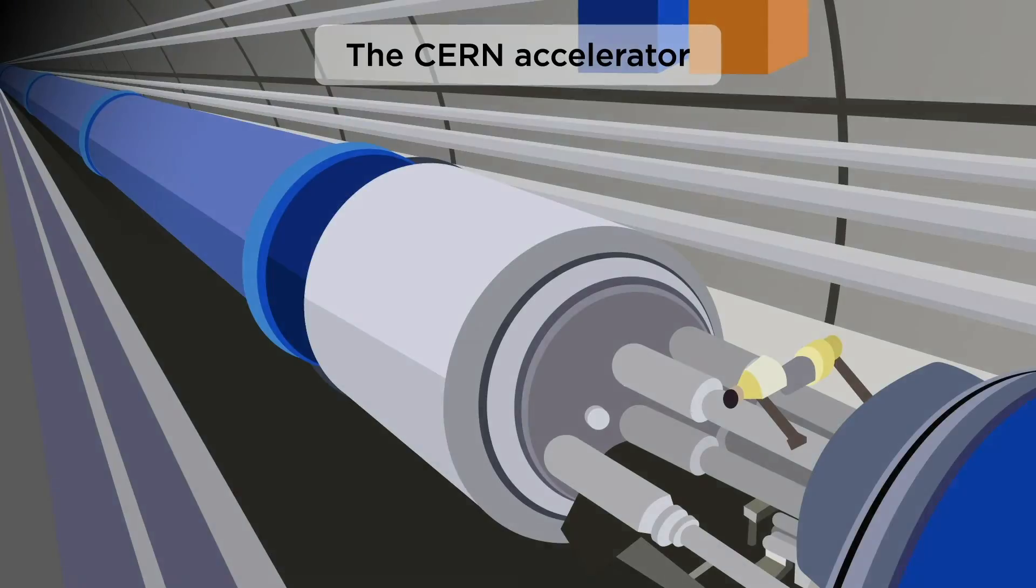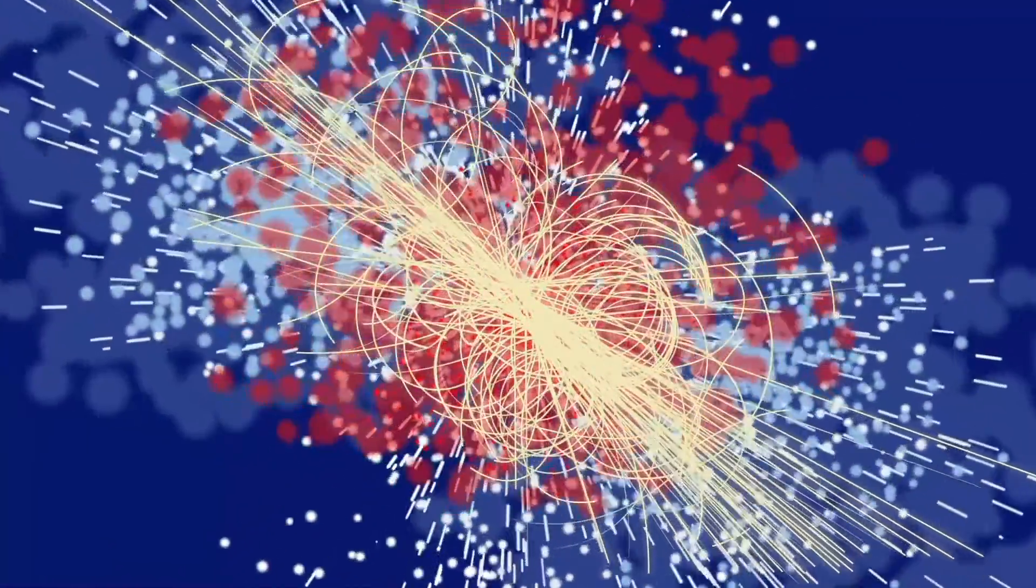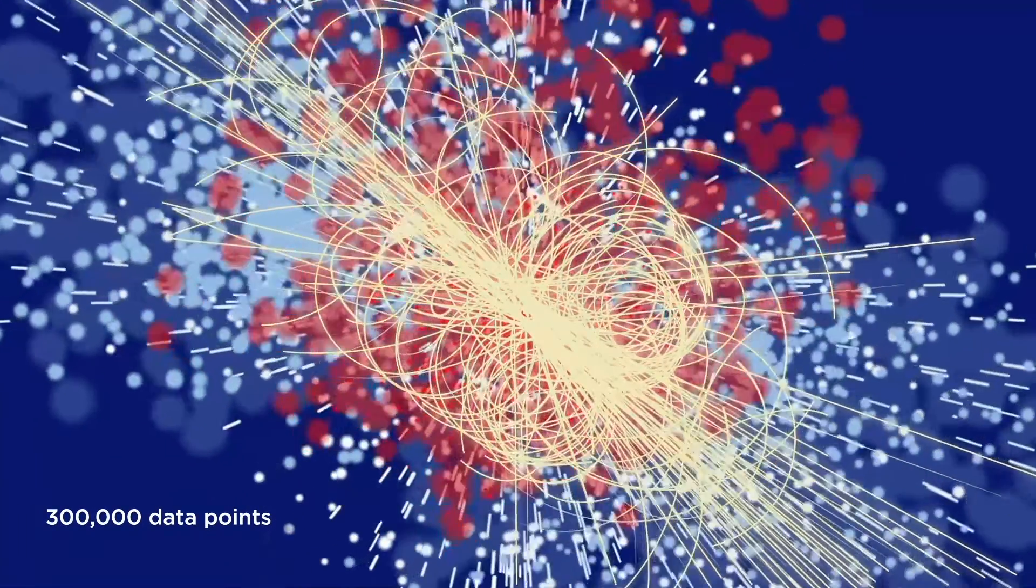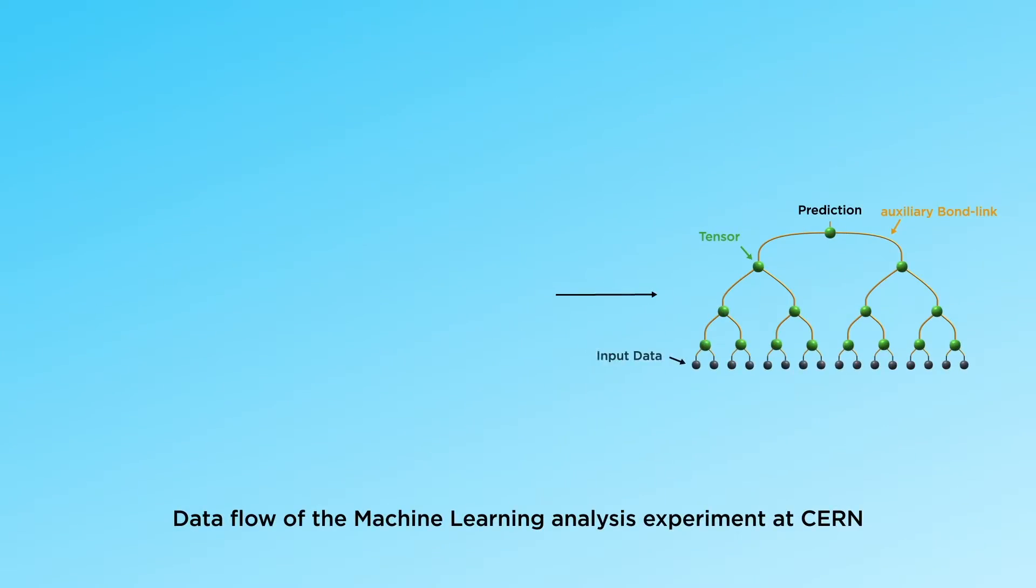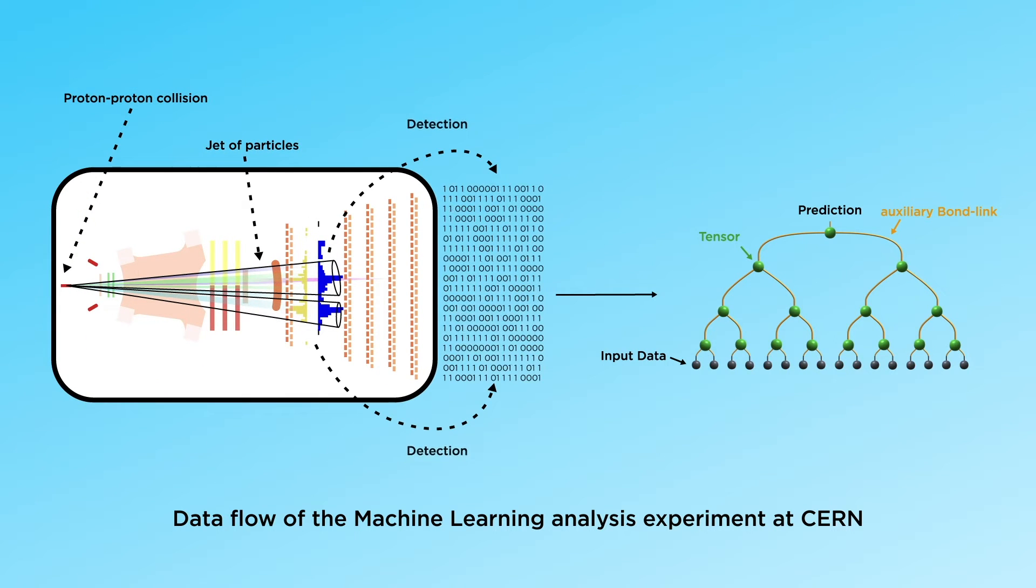They were recently applied to classify experimental data from the particle accelerator in CERN, processing over 300,000 data points. Its transparency enables tensor networks to significantly reduce the computational complexity, and thereby the prediction times, while maintaining high accuracy.